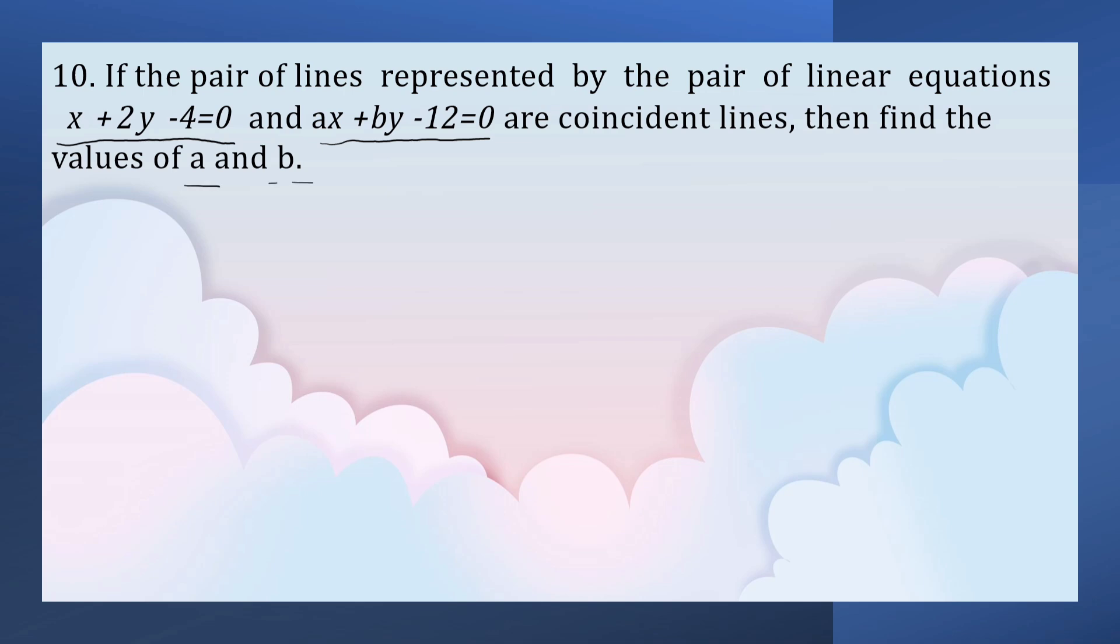The condition for coincident lines are a1 by a2 is equal to b1 by b2 is equal to c1 by c2. This is the relation between the coefficients of the pair of linear equations.